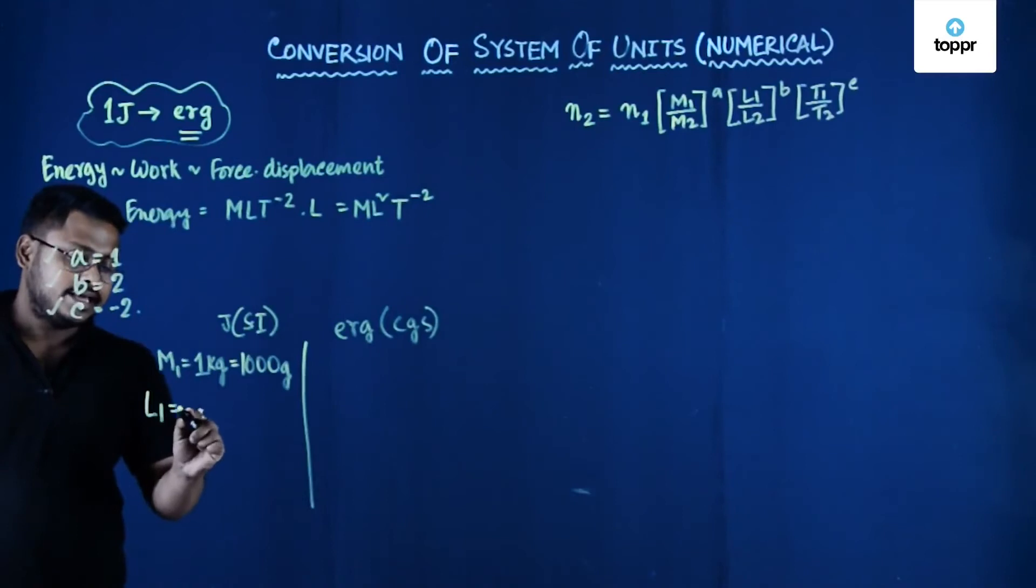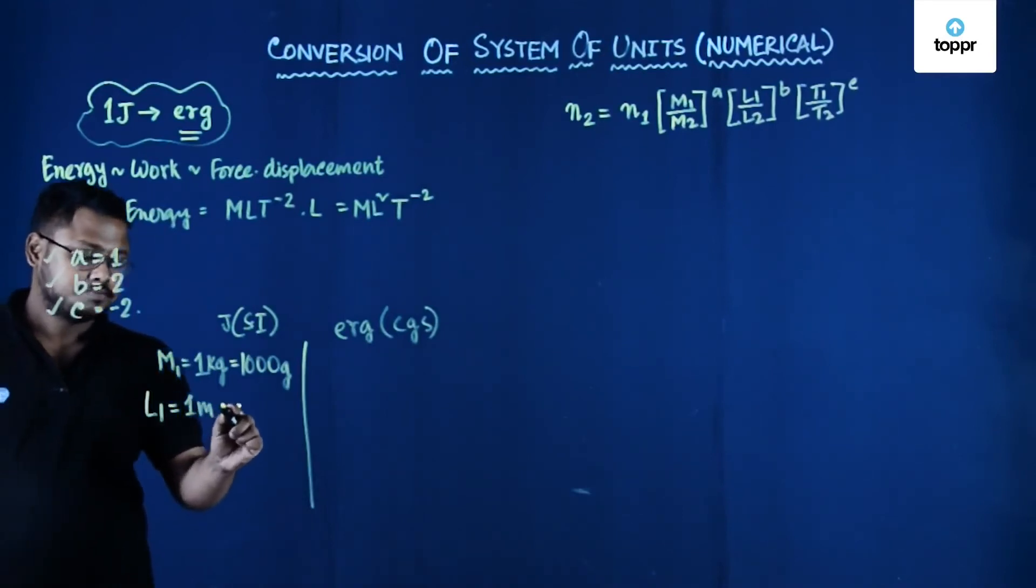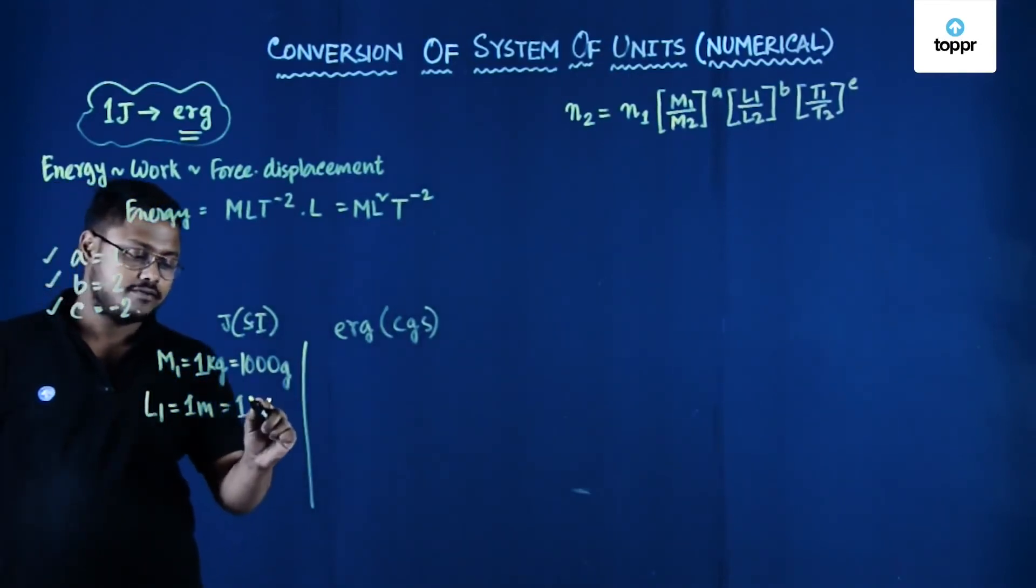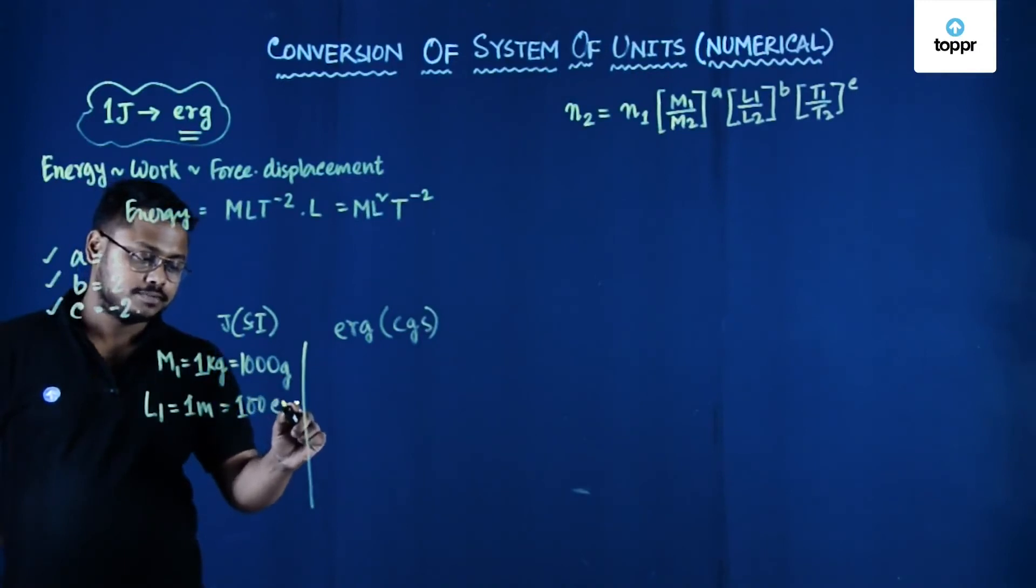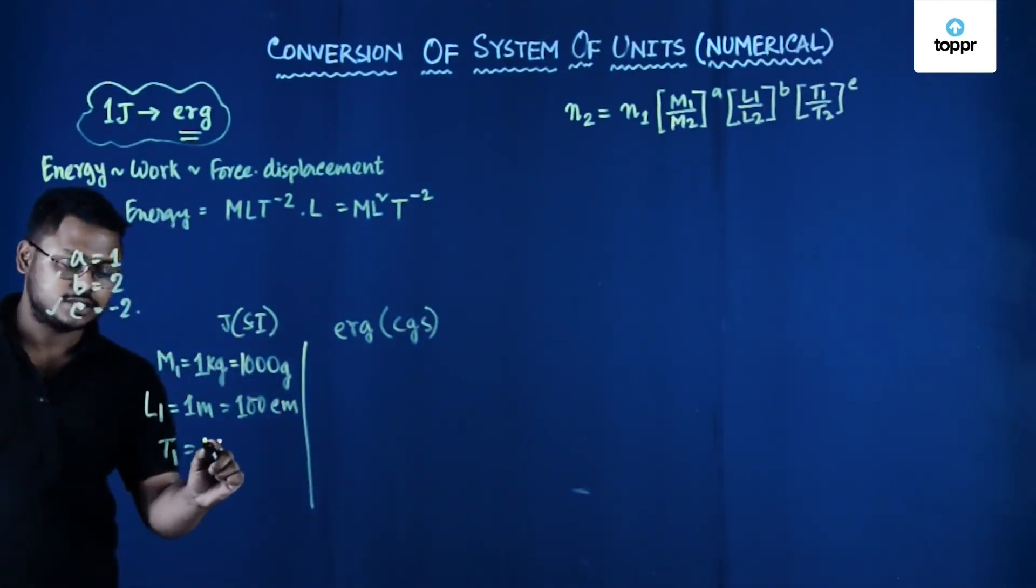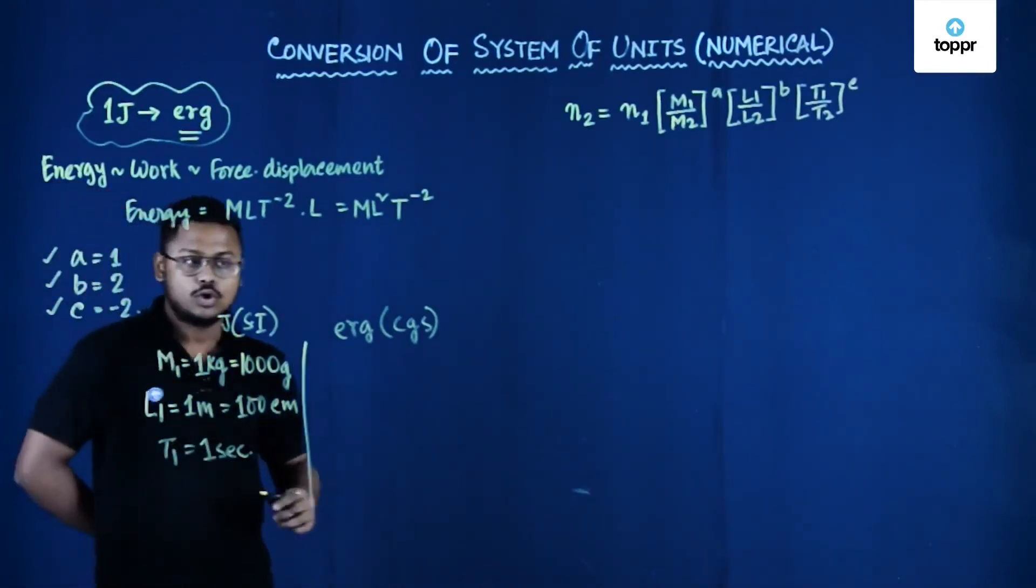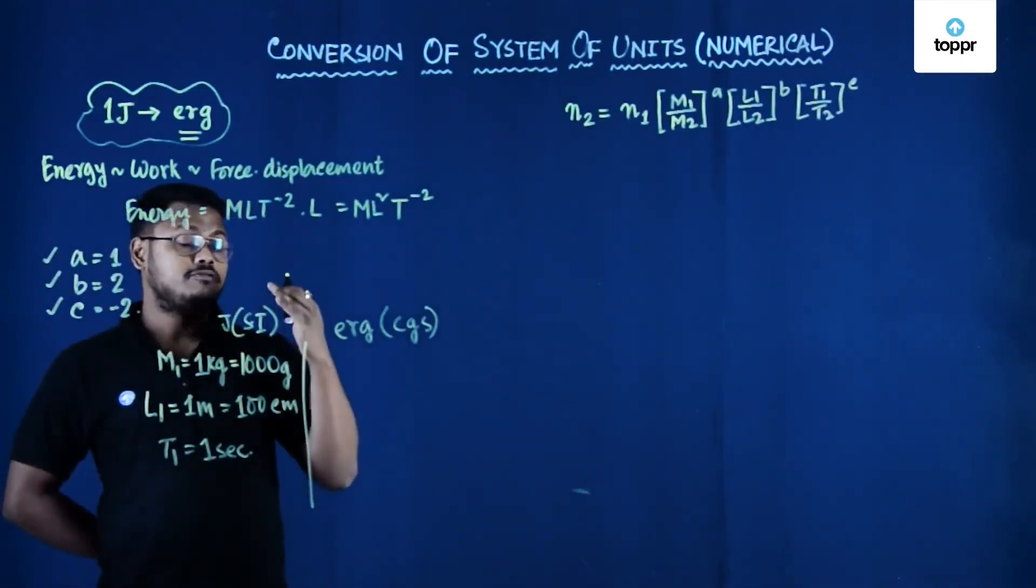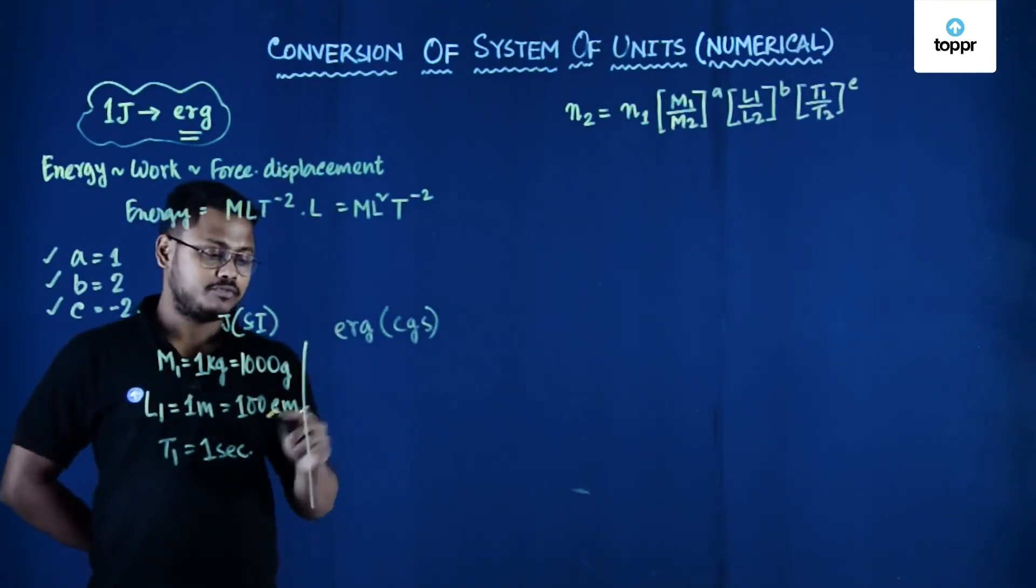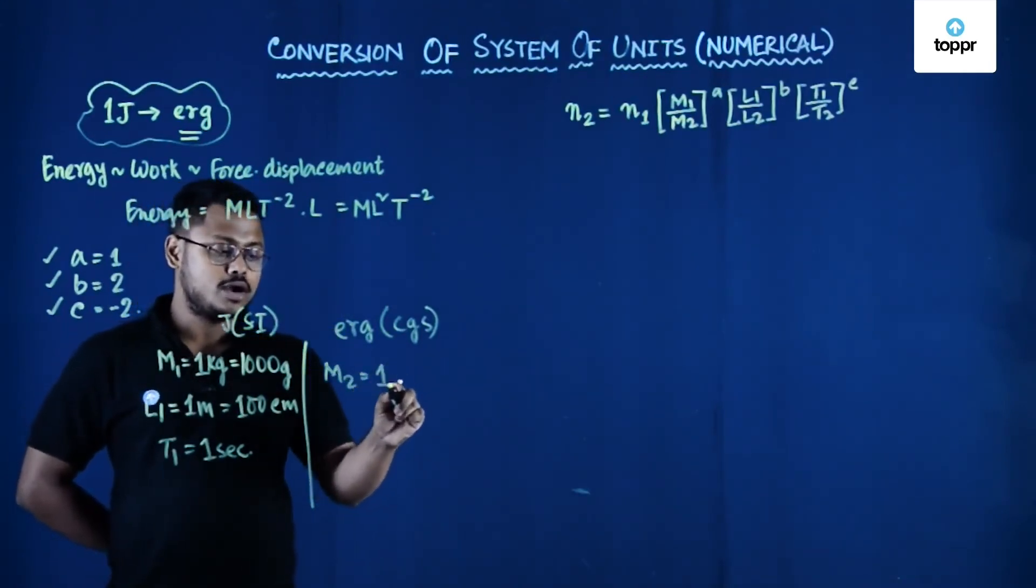The value of length is 1 meter, that is equals to 100 cm, and the value of t1 is 1 second which is same in both the cases. So what about the magnitude of the fundamental quantities in new system of unit, that is m2 which is equal to 1 gram.